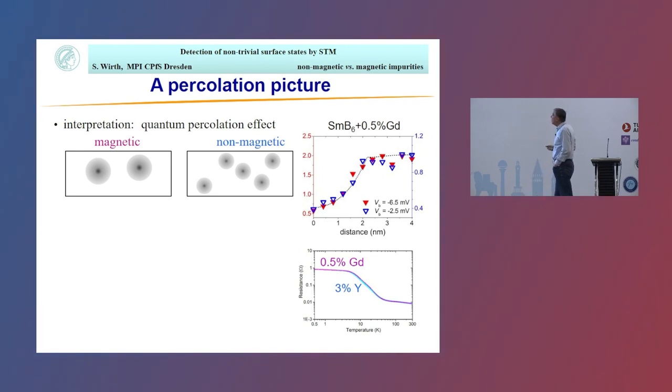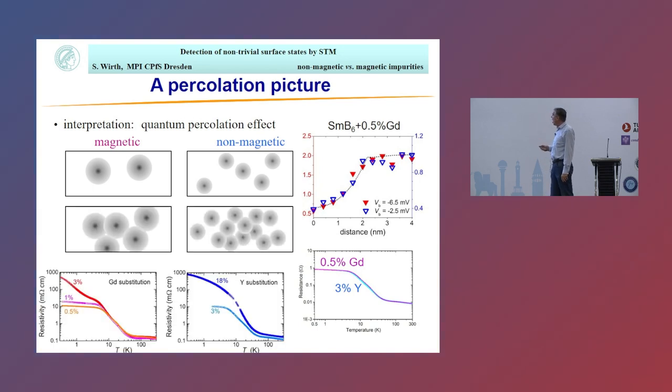To come up with a picture of what's going on: we look at the surface of the sample and we have suppressed surface states around the magnetic impurities. If we have only a very small number of impurities, you can still have a percolating path and you still have this plateau in the resistivity at low temperature, which is a hallmark of the surface states in this material. But if you increase the number of defects, at some point you prevent percolation. In case of gadolinium, that already happens at 3% doping. The plateau at low temperature is suppressed or no longer visible.